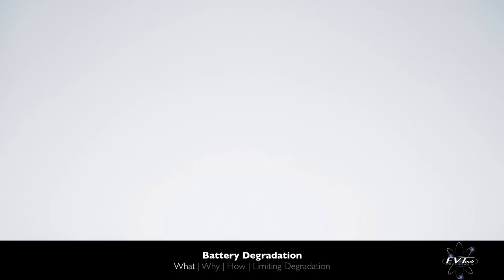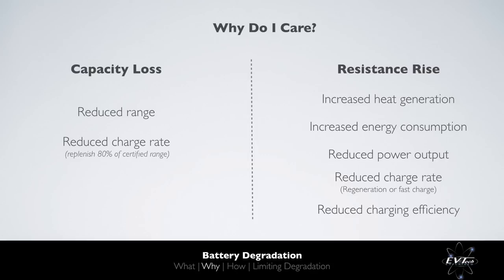The measurable effects are usable capacity loss and resistance rise. Whilst it may be obvious that capacity loss will result in a reduction of usable energy and hence a reduction in range, it may not immediately be obvious that capacity loss will also reduce the charge rate when replenishing a significant percentage of your range during a fast charge. If you are aiming to restore 80% of your original certified range through fast charging, as capacity is lost, the average state of charge throughout the fast charge will be increased, thereby typically leading to a reduced average fast charge rate.